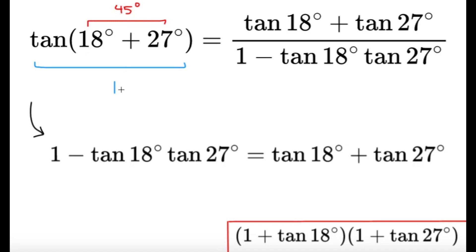So, tangent 45 degrees, that's just 1. And then let's multiply both sides by 1 minus tangent 18 degrees tangent 27 degrees. And we're going to get 1 minus tangent 18 degrees tangent 27 degrees is going to be equal to tangent 18 degrees plus tangent 27 degrees.